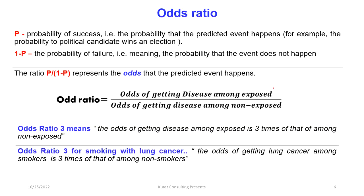For example, the odds ratio is calculated as odds of getting a disease among exposed divided by odds of getting a disease among non-exposed. If the odds ratio is 3, the odds of getting the disease among exposed is 3 times that of non-exposed. To illustrate: an odds ratio of 3 for smoking with lung cancer means the odds of getting lung cancer among smokers is 3 times that of non-smokers.